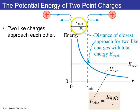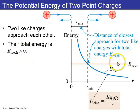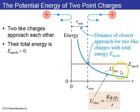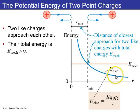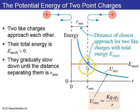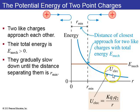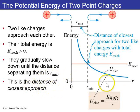For two like charges starting far apart and moving toward each other, the total mechanical energy is positive. As r decreases, the electric potential energy kq1q2/r increases until you reach r_min, where kinetic energy — the difference between mechanical energy and potential energy — goes to zero. That's the turning point: the distance of closest approach. The particles then reverse direction and move apart.